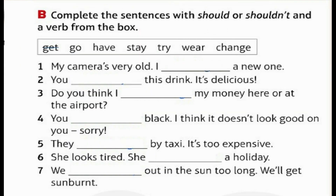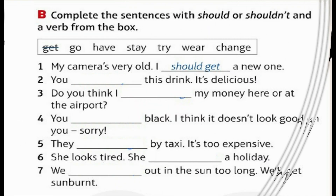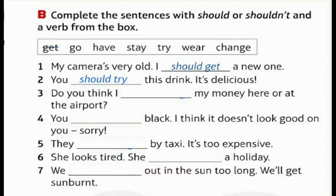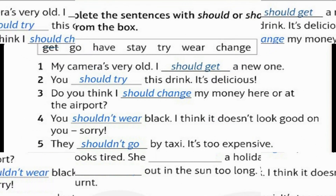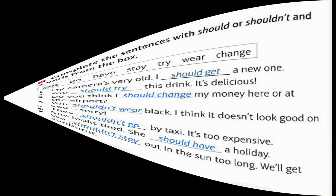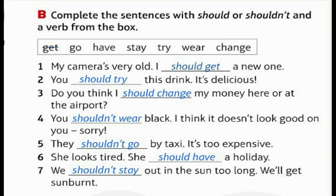Complete the sentences with should or shouldn't and a verb from the box: get, go, have, stay, try, wear, change. My camera's very old — I should get a new one. You should try this drink, it's delicious. Do you think I should change my money here or at the airport? You shouldn't wear black — I think it doesn't look good on you. They shouldn't go by taxi, it's too expensive. She looks tired — she should have a holiday. We shouldn't stay out in the sun too long, we'll get sunburned.